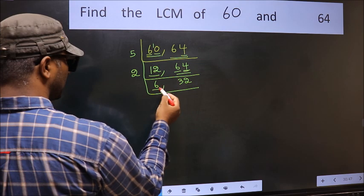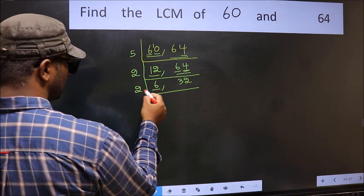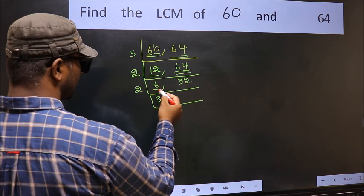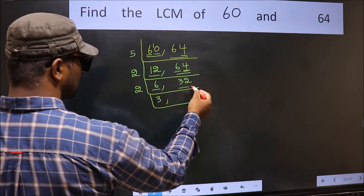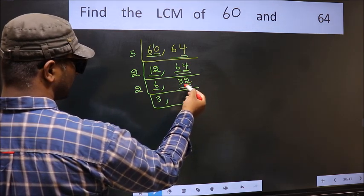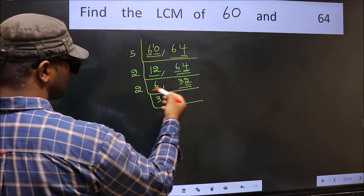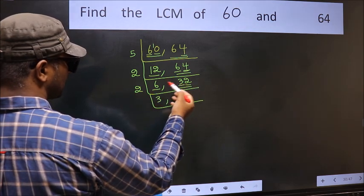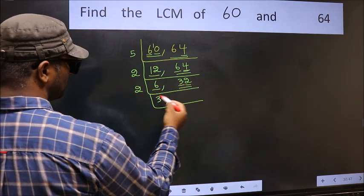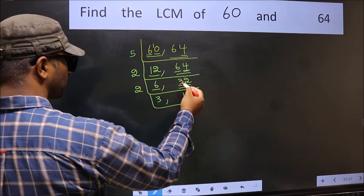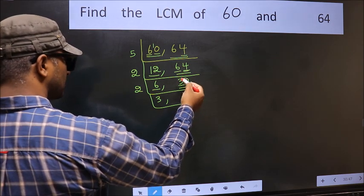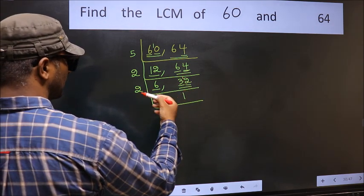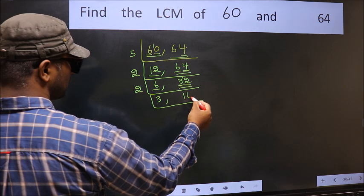Now here we have 6. 6 divided by 2: 2 threes are 6. The other number is 32 — last digit 2, so this is divisible by 2. First number 3: a number close to 3 in the 2 table is 2 — 2 ones are 2. 3 minus 2 is 1, carried forward to give 12. When do we get 12 in the 2 table? 2 sixes are 12.